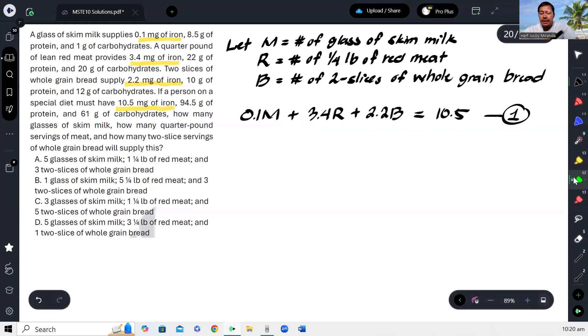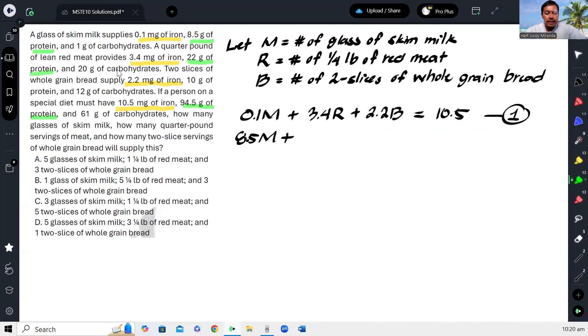Next, check naman natin, what about sa protein? Sa protein naman, ang goal ko is 94.5. So saan kukunin yun? 8.5 na manggagaling sa milk plus 22 grams na manggagaling sa red meat and then 10 grams na manggagaling sa bread. Dapat lahat ng yun ay magsum sa 94.5mg. And that will be our second equation.